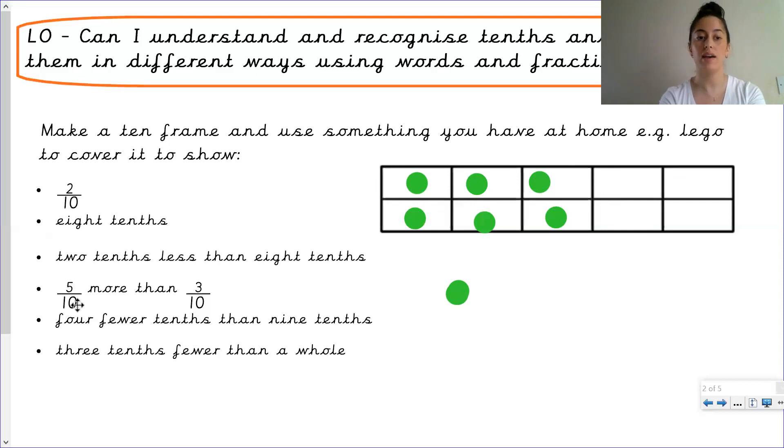Similarly with the next one. Five tenths more than three tenths. Which number do we need to start with? It says we need five tenths more than a number. So we need to find out what that number is first to then make it five more. So we need three tenths to then get five tenths more. One, two, three. Now we need five tenths more than three tenths. One, two, three, four, five.